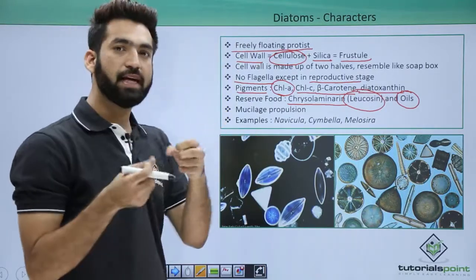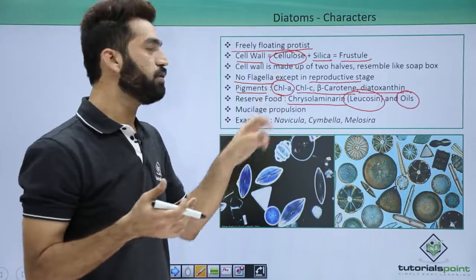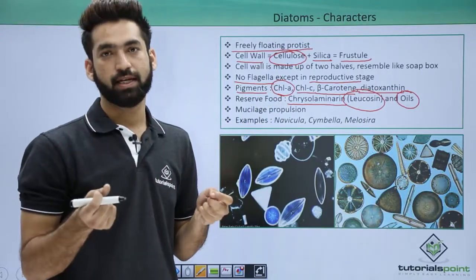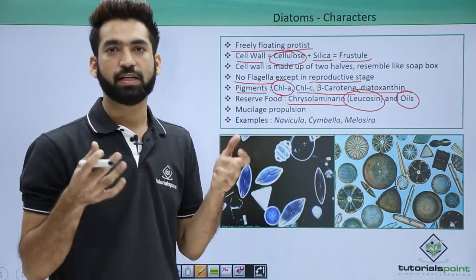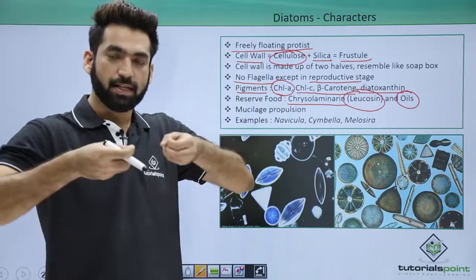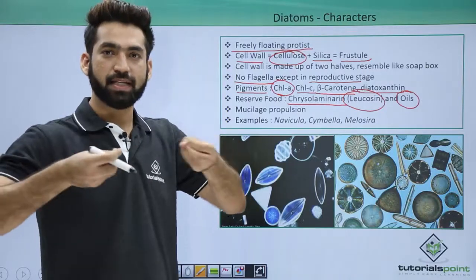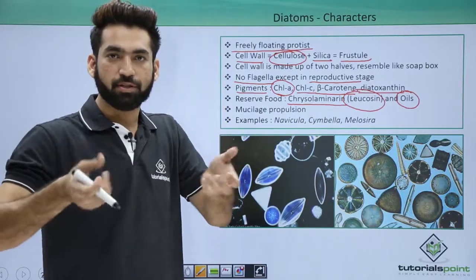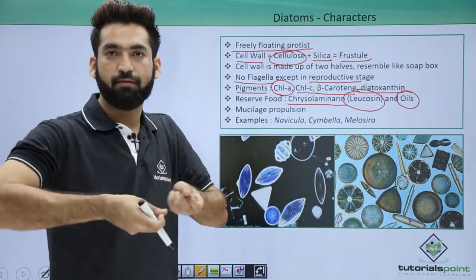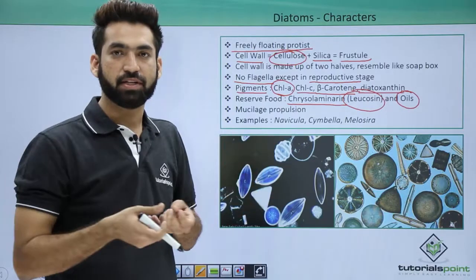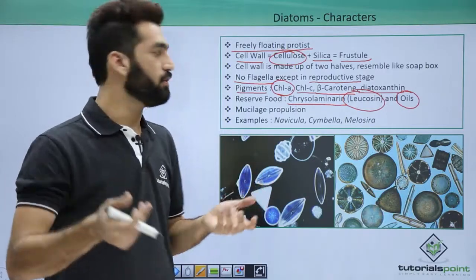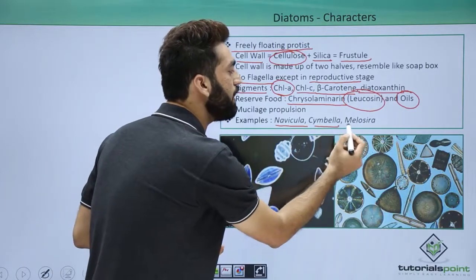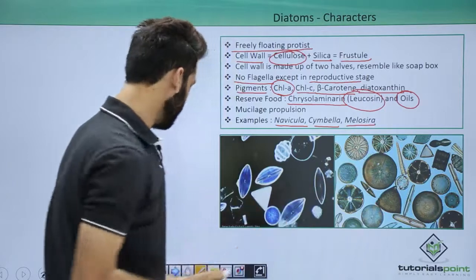Because diatoms don't have flagella, they basically move by mucilage propulsion. They secrete some mucilage around their body, and when they come onto that particular mucilage they propel from that place — that is how they move. Some examples of diatoms are Navicula, Cymbella, and Melosira.